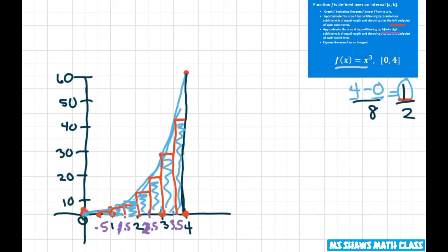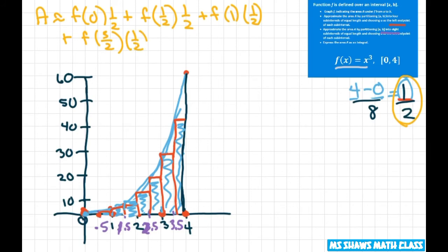So now we're doing the same thing we did before. We're going to start at f of 0 and we have our area. It's approximately f of 0, but now you multiply by 1 half. Plus f of 1 half times 1 half. Plus f of 1, times 1 half. Plus f of 3 halves times 1 half. Plus f of 2, times 1 half. Plus f of 5 halves, times 1 half.